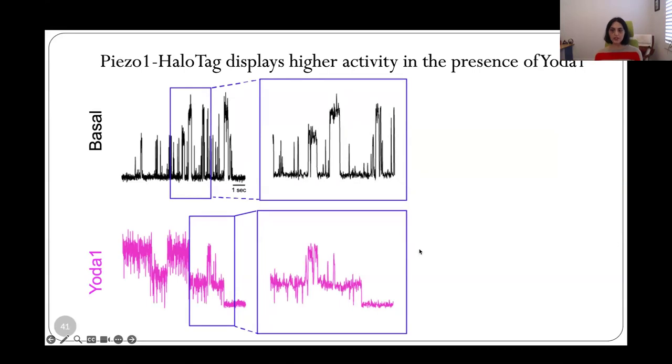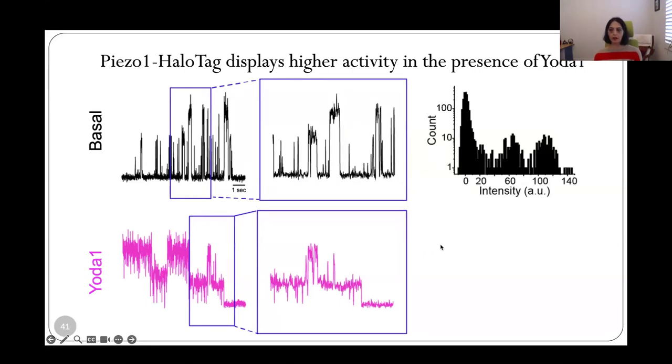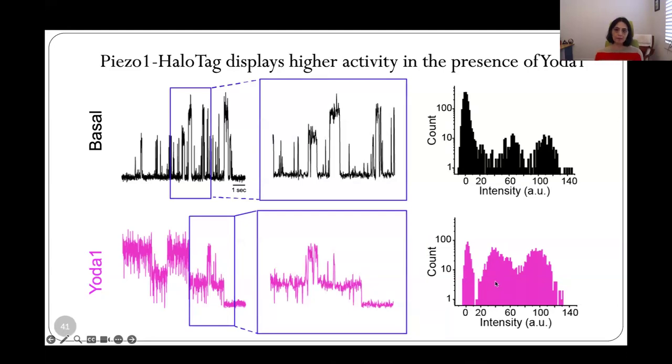These are the traces we just saw plotted next to each other and we can plot an all-points histogram from the traces which shows a prominent peak in the basal condition corresponding to the closed state and smaller peaks corresponding to the open state. Then in the presence of Yoda1 you see the bright peaks increasing at the expense of the dim closed peak. So we've created a tool that allows single-channel recordings of Piezo1 with resolution that approaches that of patch-clamp electrophysiology but now in intact cells that haven't been poked by electrodes and in a format that allows spatial monitoring of channel activities of hundreds of puncta simultaneously on the cell surface.